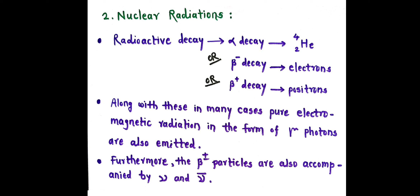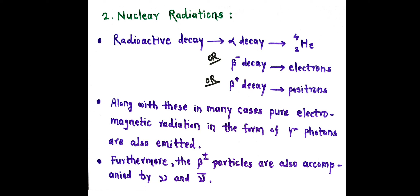The second characteristic is nuclear radiations. In radioactive decay, there may be alpha decay, that is emission of helium, or there may be beta minus decay, that is the emission of electrons, or there is beta plus decay, that is emission of positrons. Along with these, in many cases, gamma photons are also emitted.